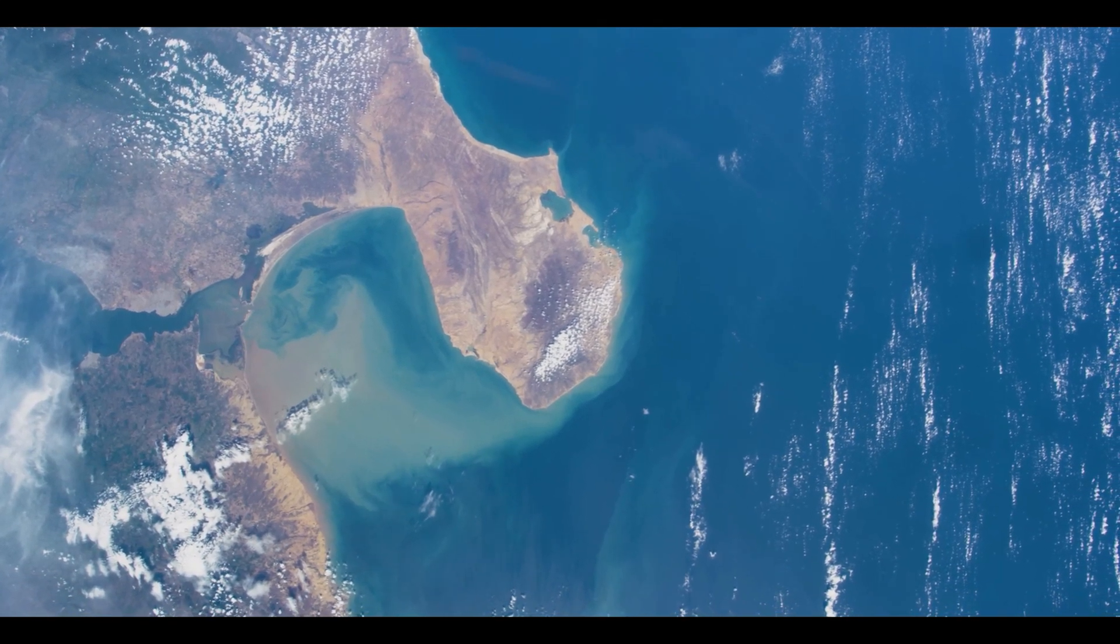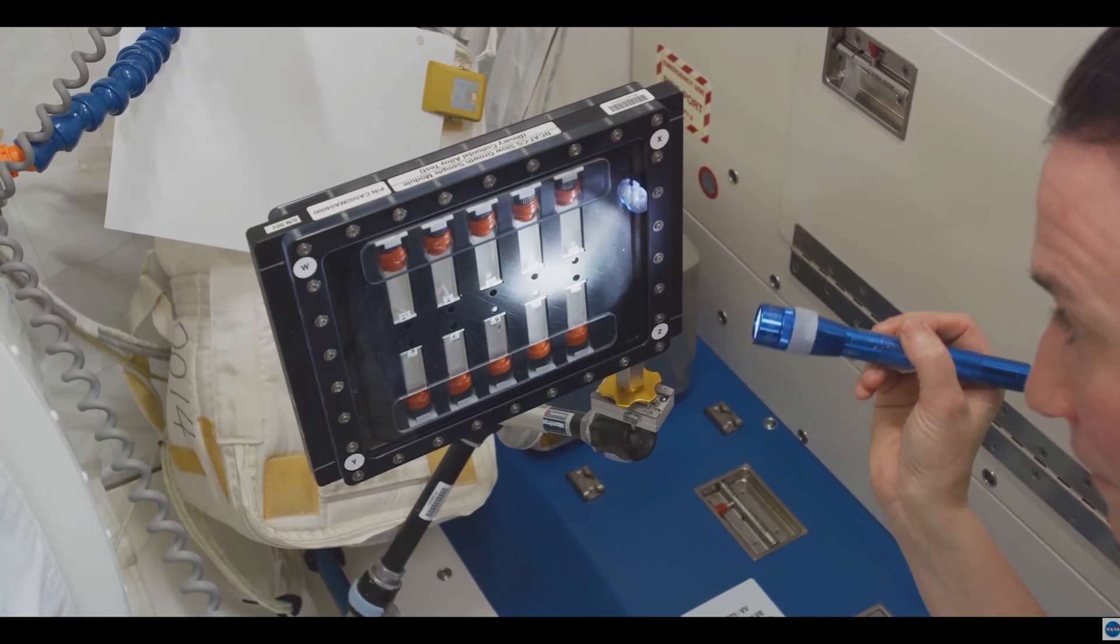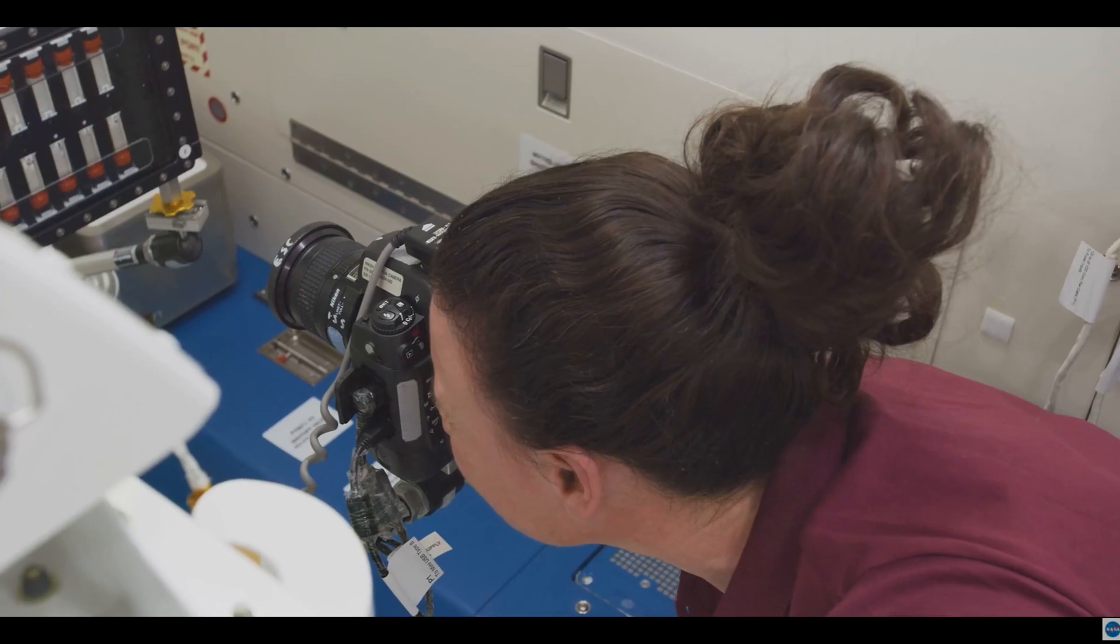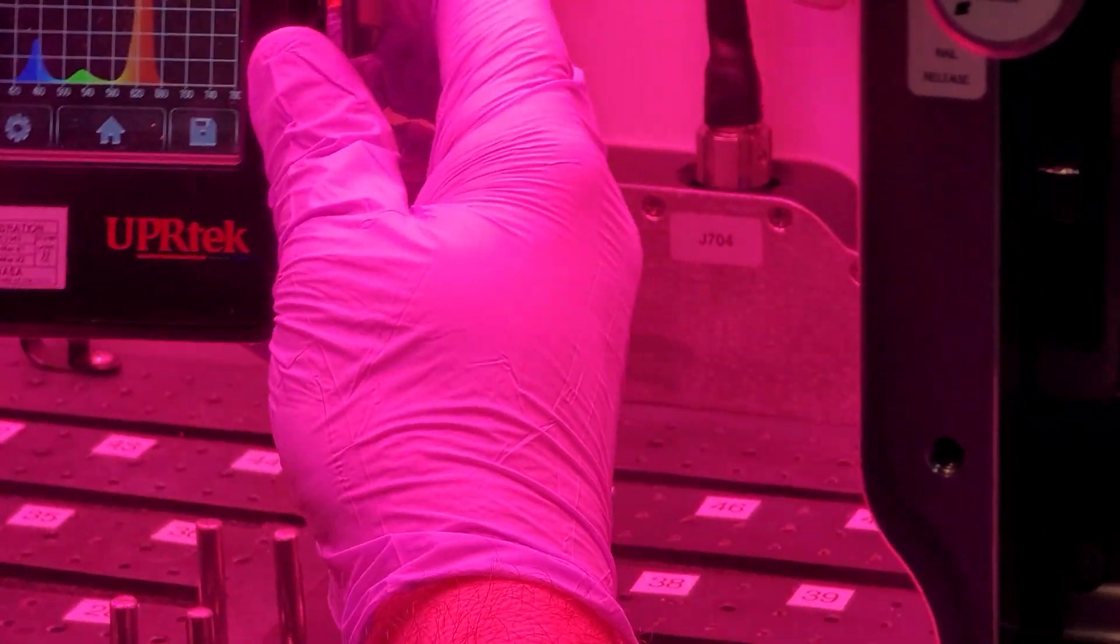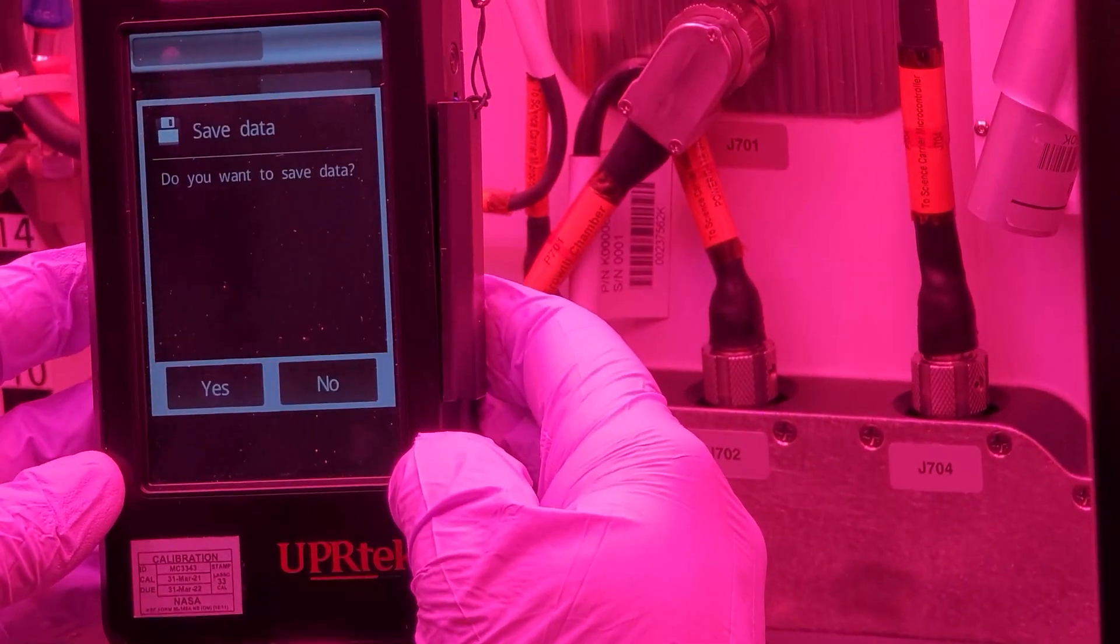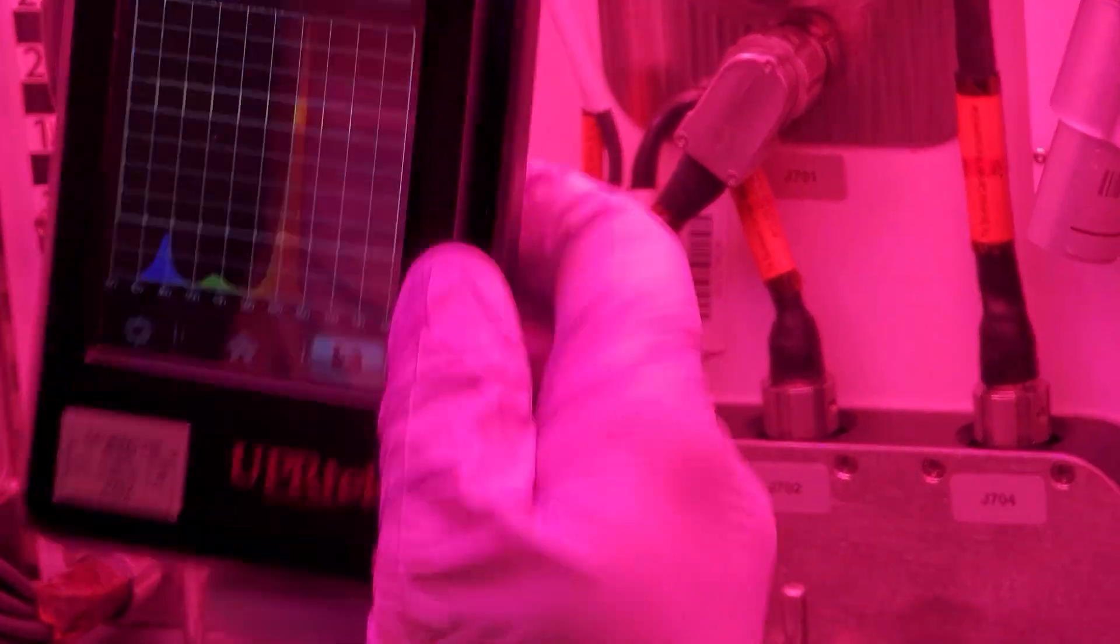So the principal investigator, whoever's running the experiment and has the whole concept of procedures and operations for the experiment, basically dictates what the light levels are going to be, the temperature inside, how different things are going to be carried out and they have the general idea of what they're actually trying to accomplish.